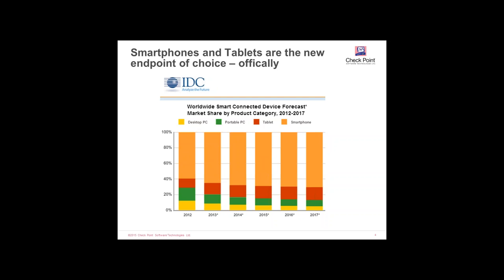This is mirrored in sales statistics: smartphones and tablets far outweigh sales of traditional Windows, Mac PCs, and desktops. You could almost say that at this point the new endpoint — the first device of choice — is actually a mobile device as opposed to a traditional thick client. Moving forward, the endpoint is now the mobile device.